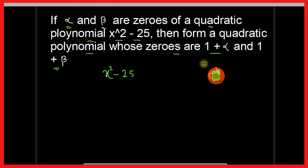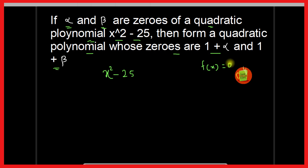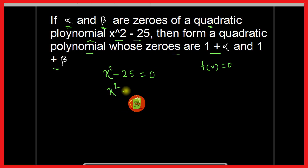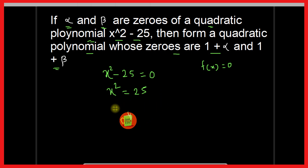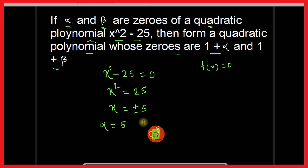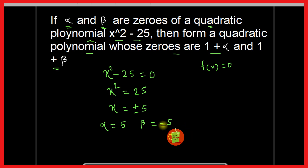To find the zeros, we take f(x) equal to 0. So x squared minus 25 is equal to 0. Take 25 to the other side, you will get x squared equal to 25. Taking square root of both sides, x is equal to plus or minus 5. So one root will be alpha, that is 5, and another root, beta, that is minus 5.